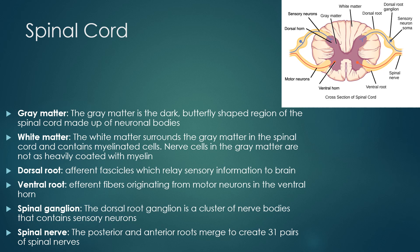Looking at the cord in cross section, you see the butterfly-shaped, darker gray matter surrounded by white matter. The gray matter contains the neuronal bodies and does not have as much myelin as the white matter, which gives it the characteristic color. The dorsal root contains afferent fascicles that relay sensory information to the brain. The ventral root contains efferent fibers originating from motor neurons in the ventral horn. The dorsal root ganglion is a cluster of nerve bodies containing sensory neurons, and the two roots come together at each segment to form spinal nerves.